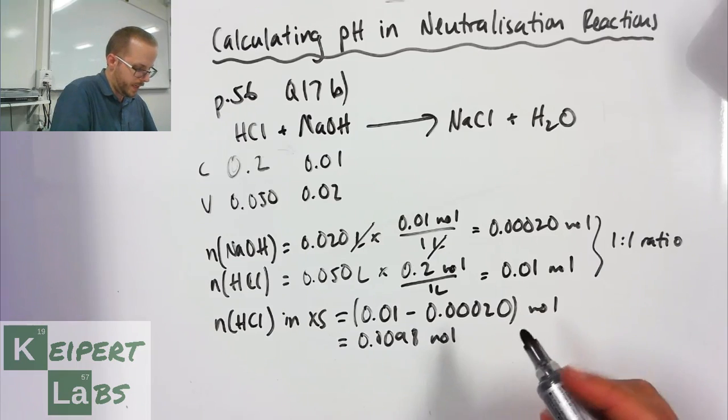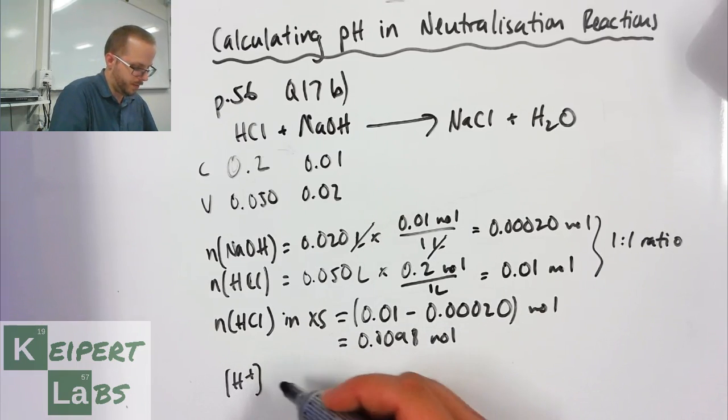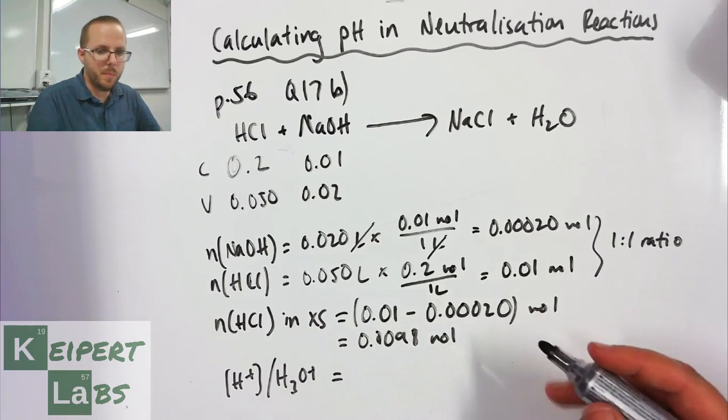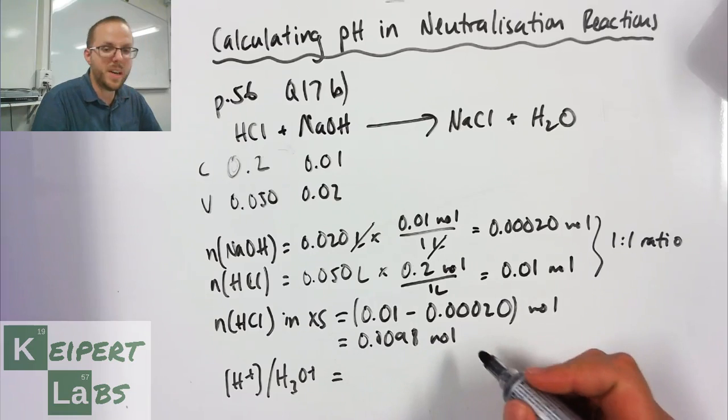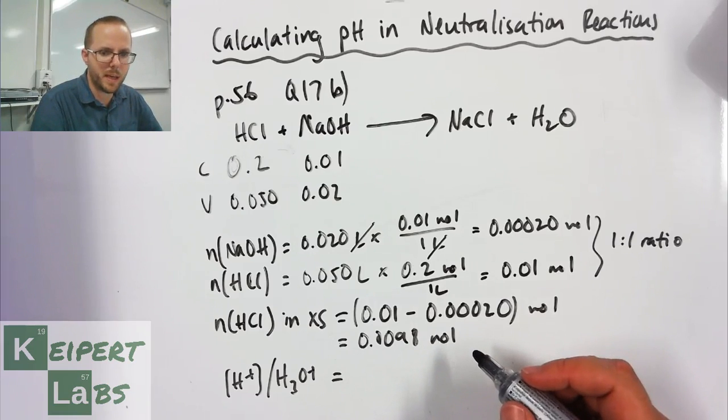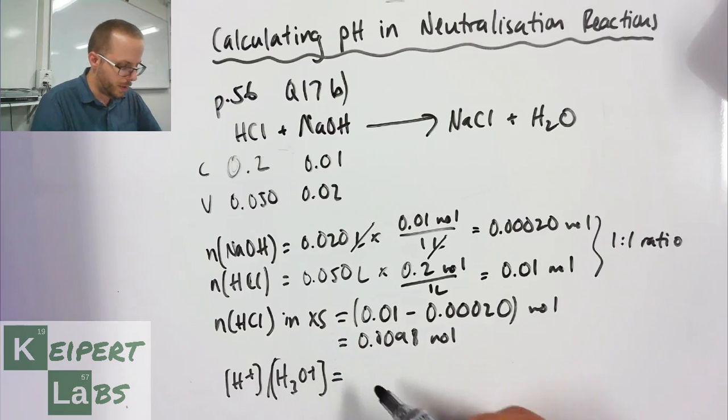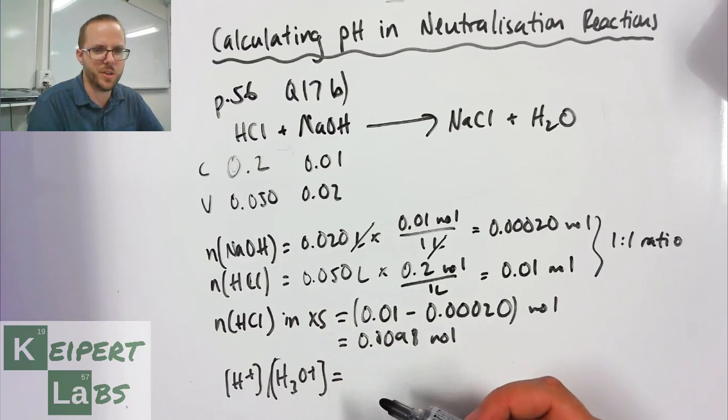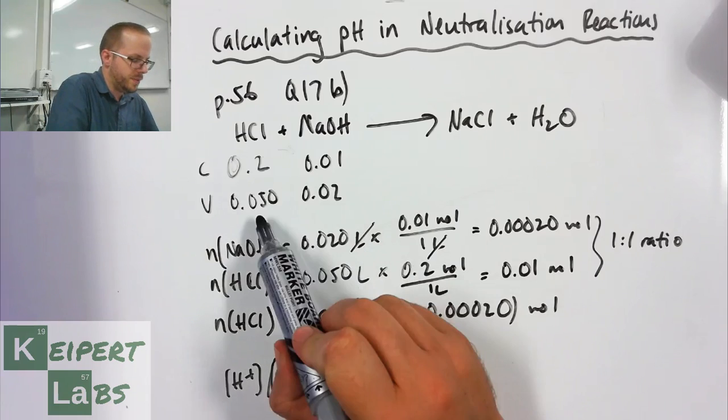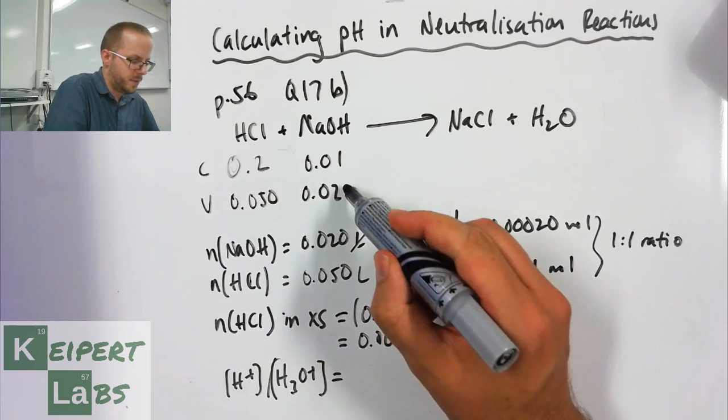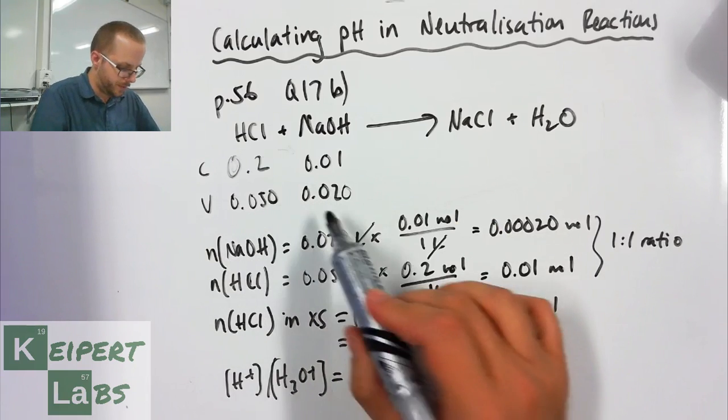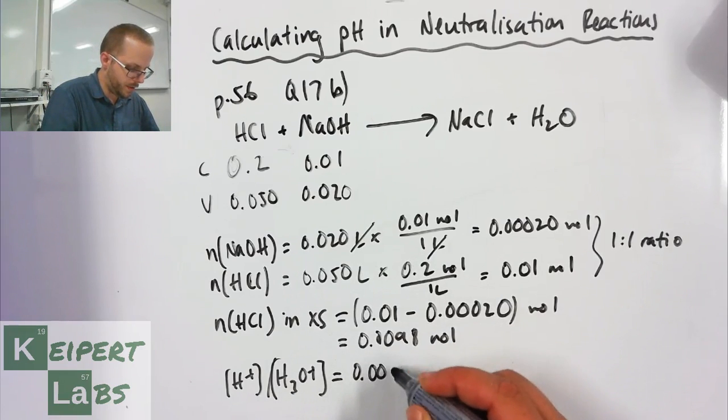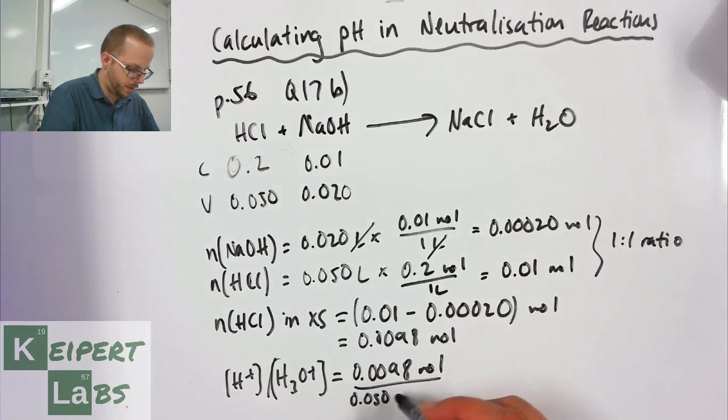Now what we need to do is turn this into a concentration of H+ or hydronium ions. We have a number of moles and we have a volume, but be careful here that our volume for calculating our concentration has changed because we had 50 mL of this combined with 20 mL of this. So now we have 0.0098 moles divided by 0.070 litres.